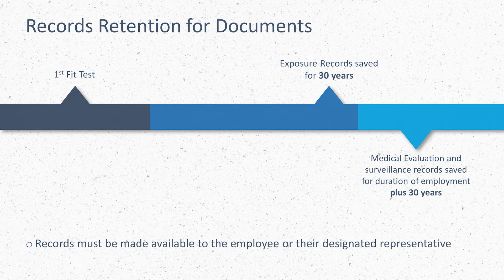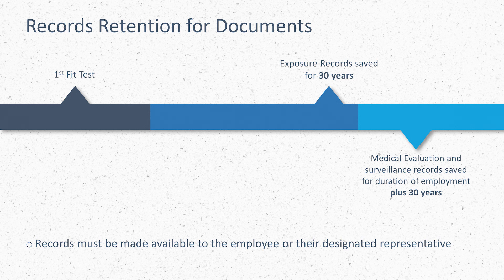Finally, let's talk record keeping. To comply with the silica standard, fit test records for respiratory protection must be maintained until the next test or for one year. Exposure records or air sampling results must be saved for 30 years with detailed information about who was sampled, what tools they were using, the conditions of the work environment the day sampling was performed, and the materials being processed. Medical evaluation and respiratory protection and surveillance records must be retained for at least the duration of employment plus 30 years. These records must also be made available to employees or their designated representatives.